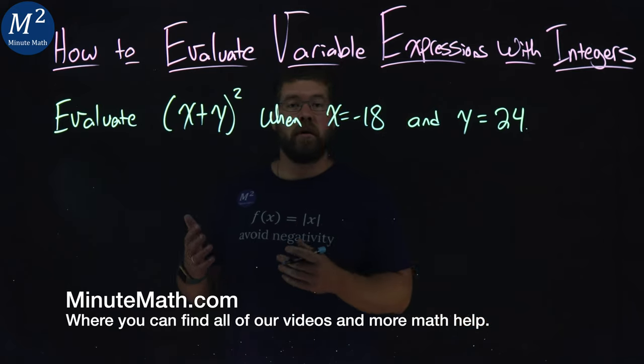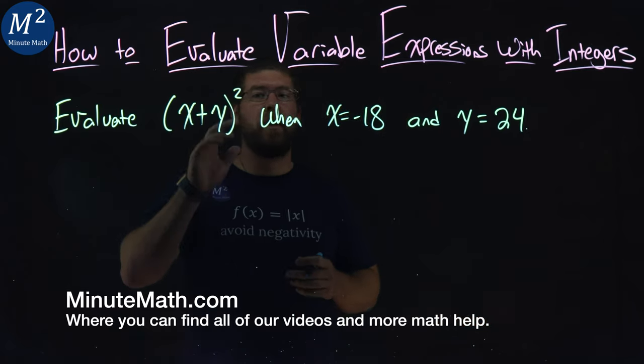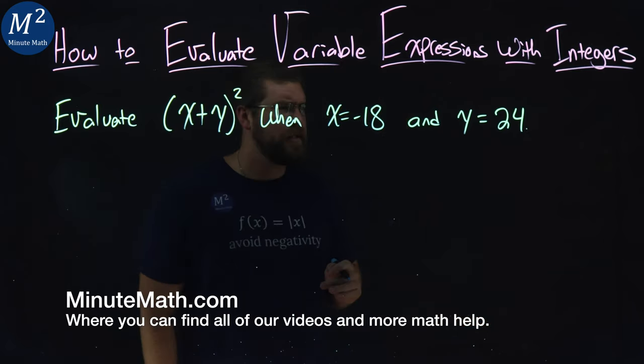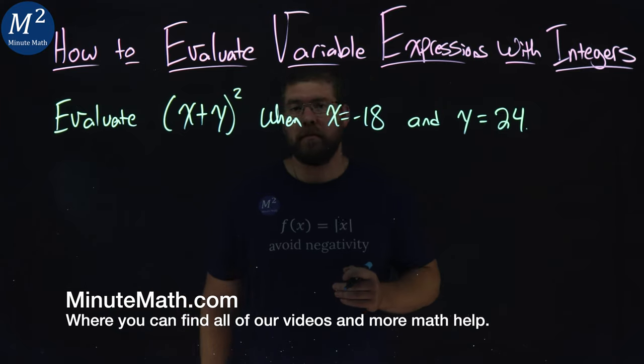We're given this problem here. Evaluate x plus y all squared when x equals negative 18 and y equals 24.